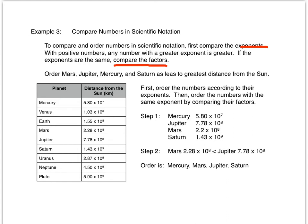Jupiter and Mars both have exponents of eight, but 7.78 times 10 to the eighth is the greater and 2.28 times 10 to the eighth is smaller. Saturn at 1.43 times 10 to the ninth has the highest exponent. Mars at 2.28 times 10 to the eighth is less than Jupiter at 7.78 times 10 to the eighth because 2.28 is less than 7.78. So the order would be Mercury, then Mars, then Jupiter, then Saturn.